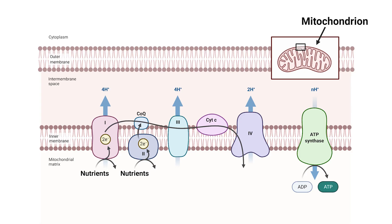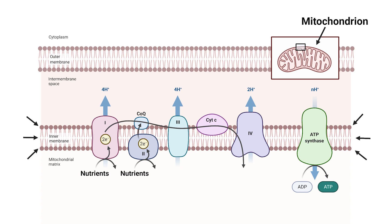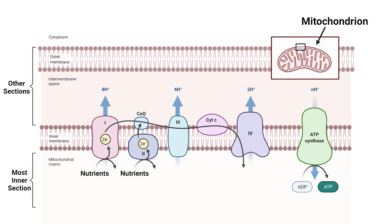If we zoom into our mitochondria of our cells, and we close in on the energy-producing sections of your mitochondria, there are these proteins that make up a chain known as the electron transport chain. These proteins are inserted into the inner membrane of the mitochondrion. This membrane separates the other sections of the mitochondrion from the most inner part of the mitochondria, known as the matrix. This is important because this separation allows a gradient of molecules to form, some being found outside and some inside of this membrane.